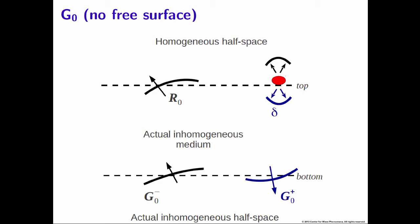In Filippo's case, the actual model has a homogeneous half-space above the top-deck level — basically no free surface. On the bottom-deck level, we get reflections. We have this down-going field from the source as a delta function, and we get a down-going Green's function G-plus and an up-going Green's function G-minus. Notice the subscript 0: G0 means there are no free surface multiples in these Green's functions. On the top-deck level, our Green's function is just the reflection response R0 — no free surface multiples.